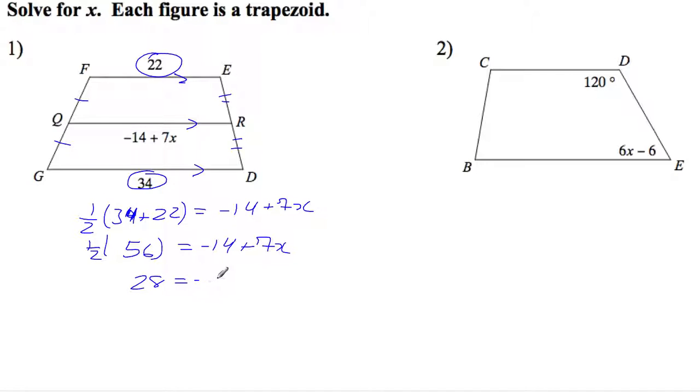So I get 28 is equal to -14 plus 7x. I'm going to add 14 to both sides. So that's going to give me 42 is equal to 7x. Divide both sides by 7. X is equal to 6.